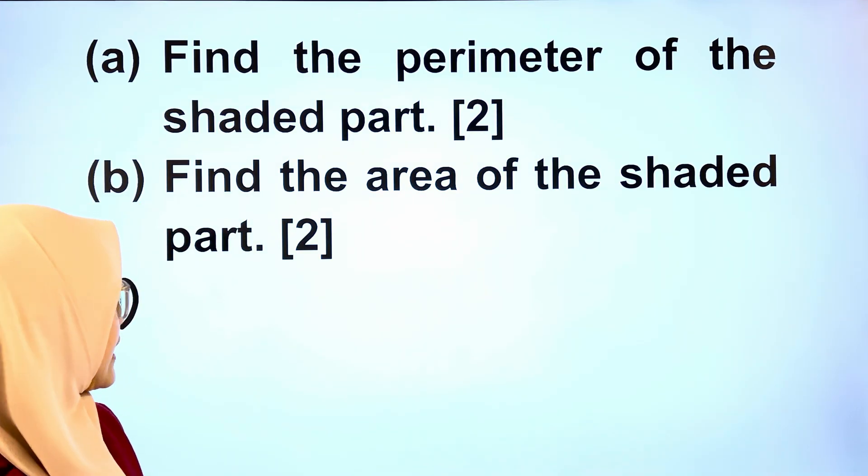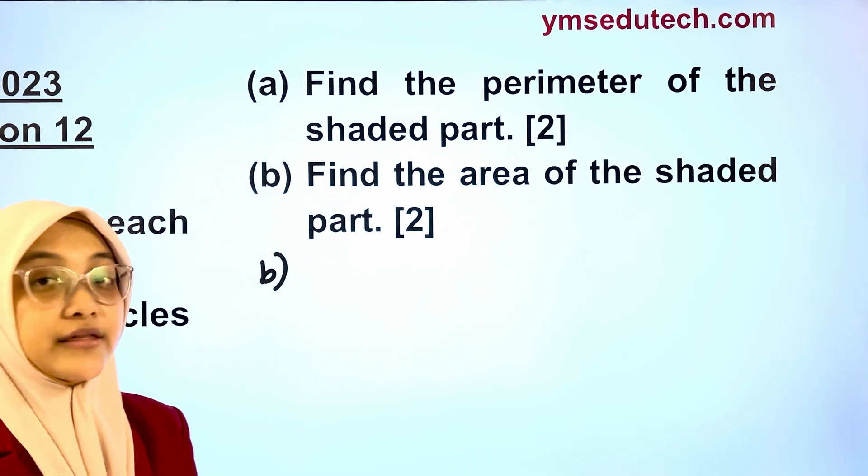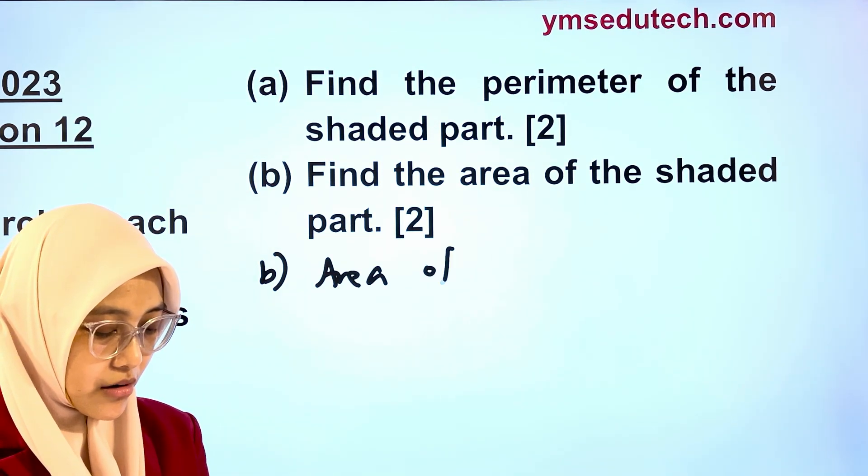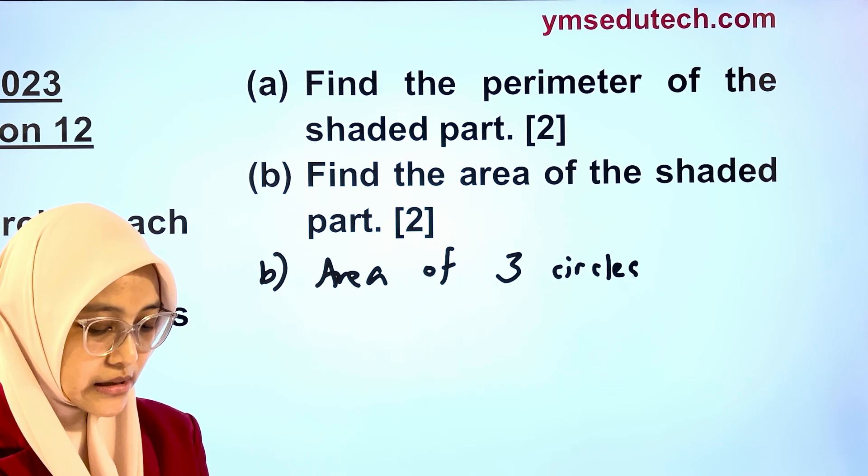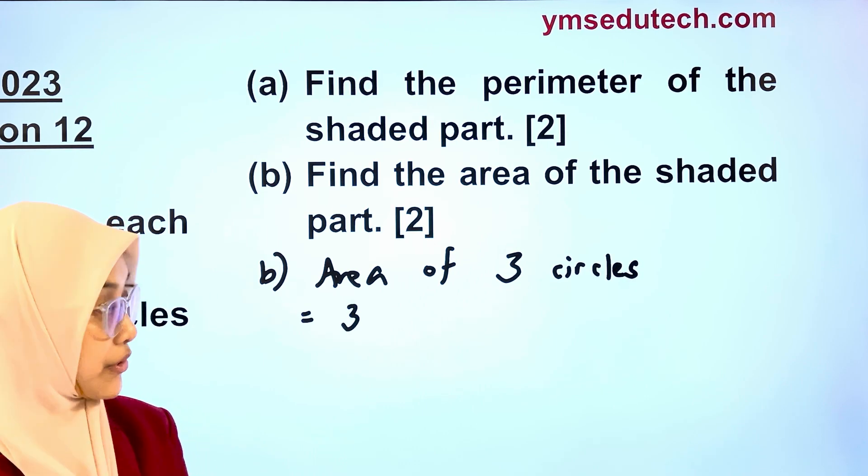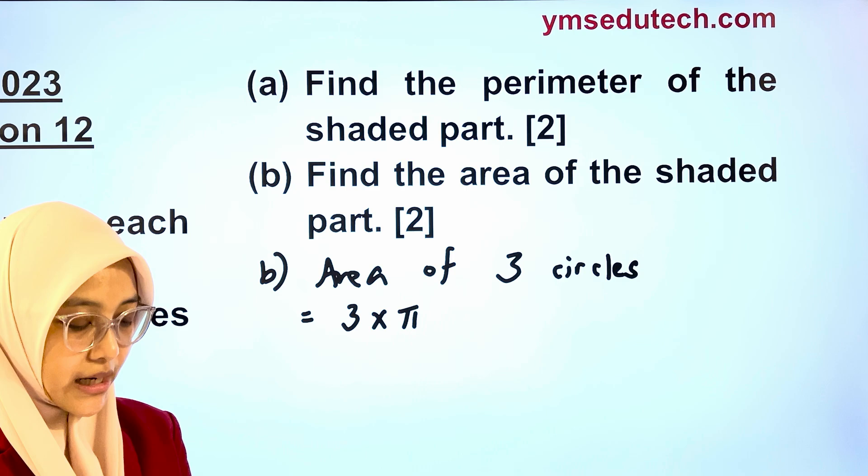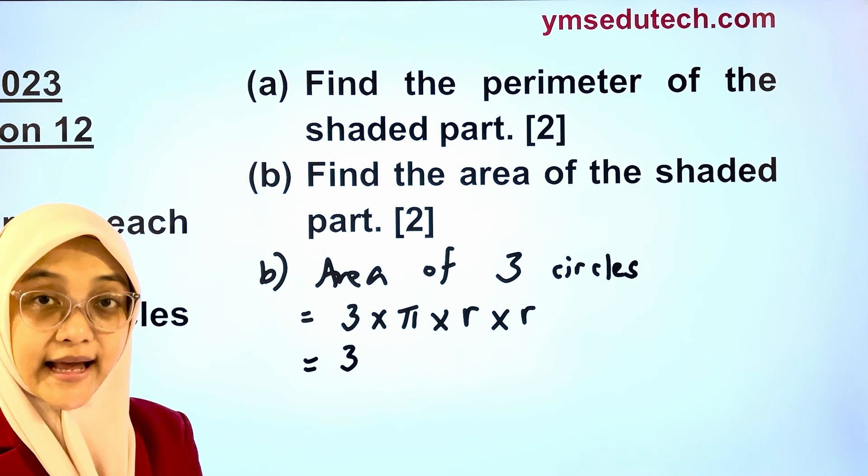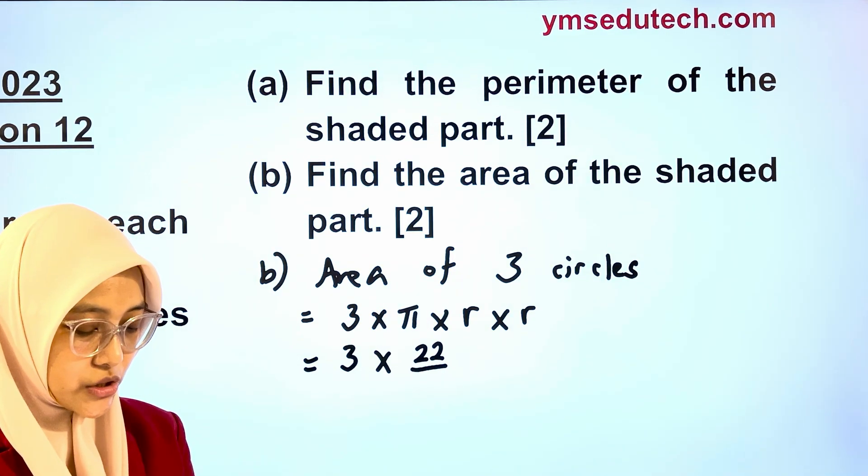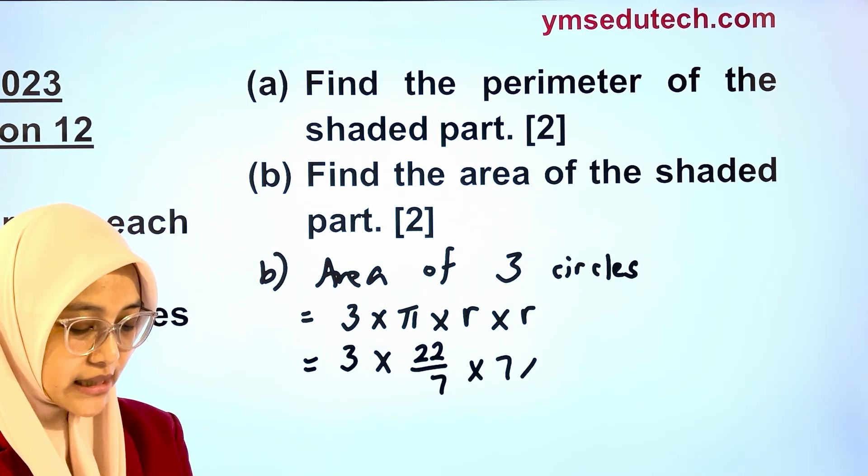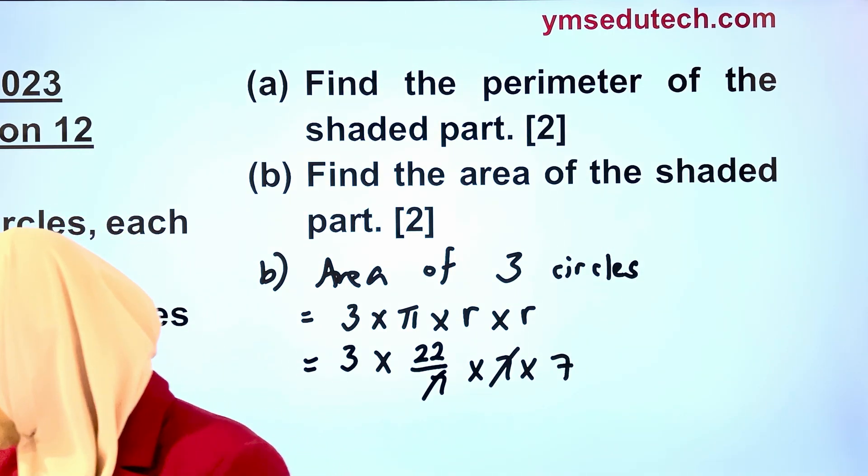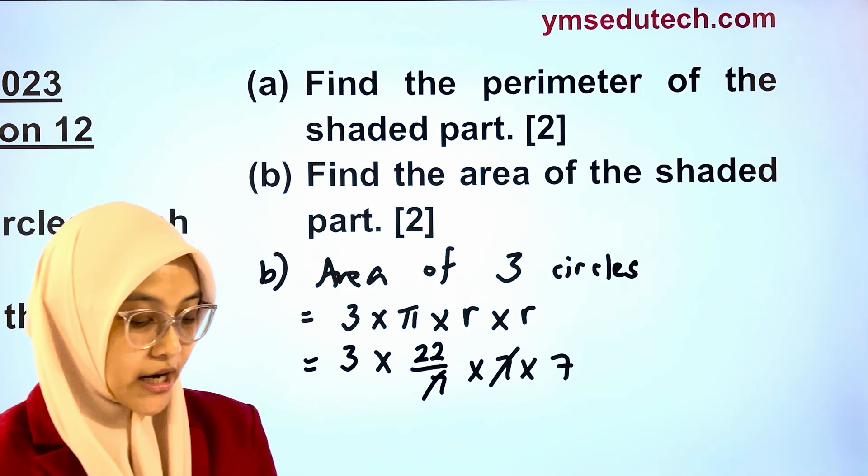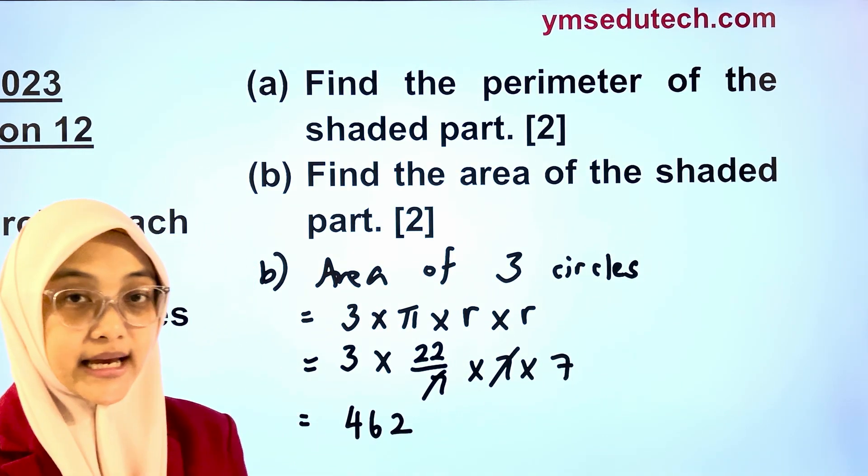First, we're going to find the area of three circles. Area of three circles is equals to 3 multiplied by pi multiplied by radius multiplied by radius. Put in the values. 3 multiplied by 22 out of 7 times 7 times 7. That is 66 multiplied by 7. 462 square cm.